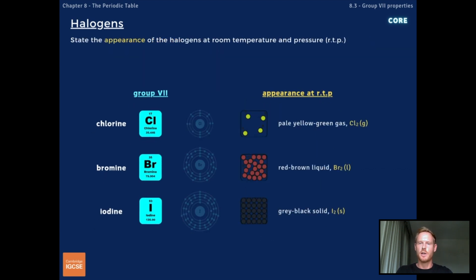At room temperature and pressure, chlorine is a pale yellow gas, bromine is a red-brown liquid, and iodine is a grey-black solid. The change in physical state from gas to liquid to solid indicates an increase in density down the group.